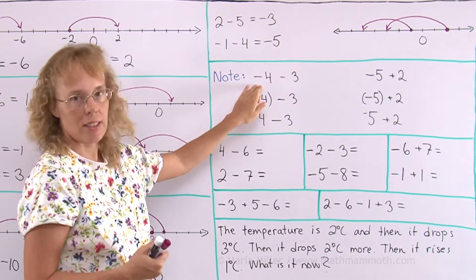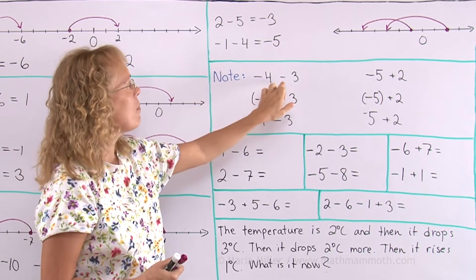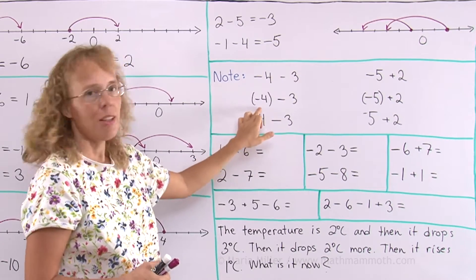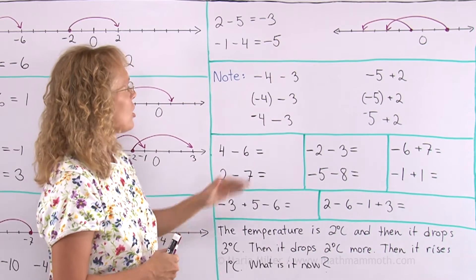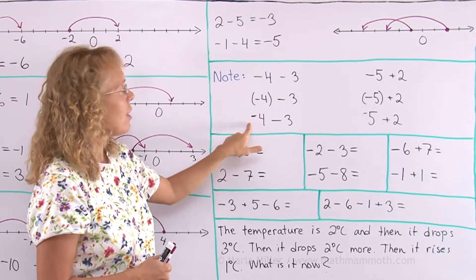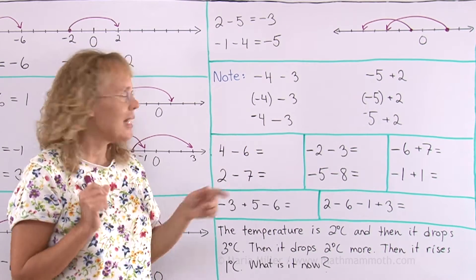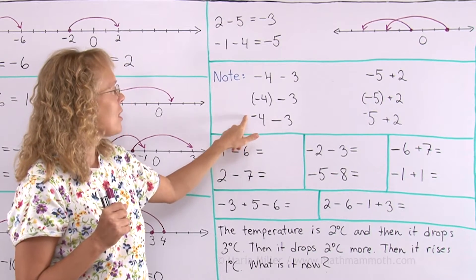First one I've been using in this lesson, negative 4 minus 3. Now here we put parentheses around the negative number, around the negative 4, which is just fine too. And here the minus sign is elevated, so this is negative 4.